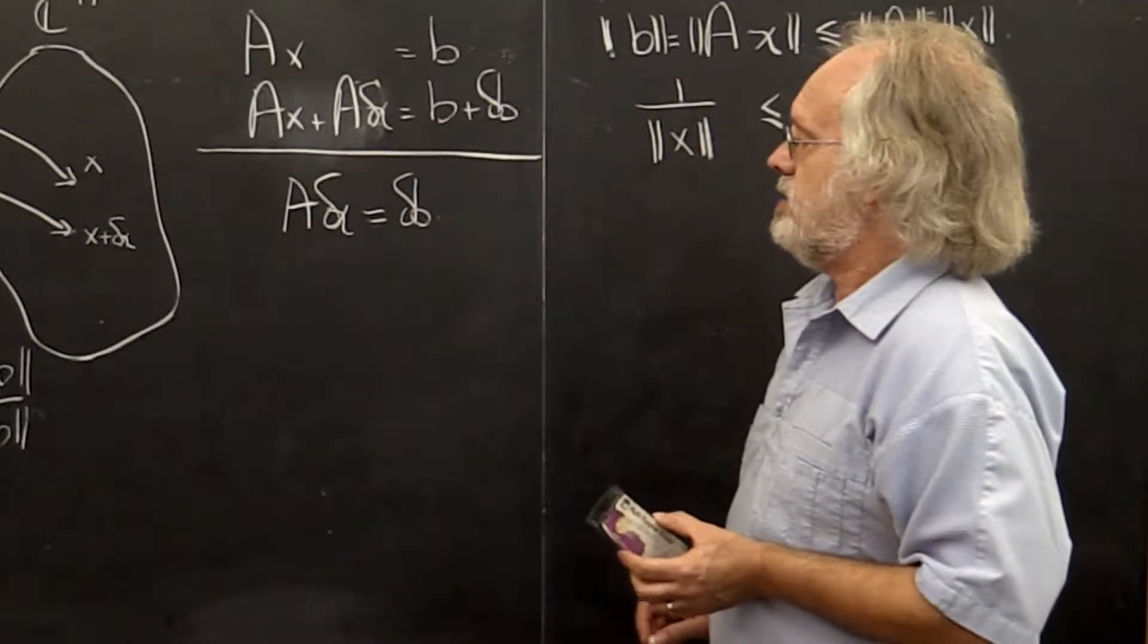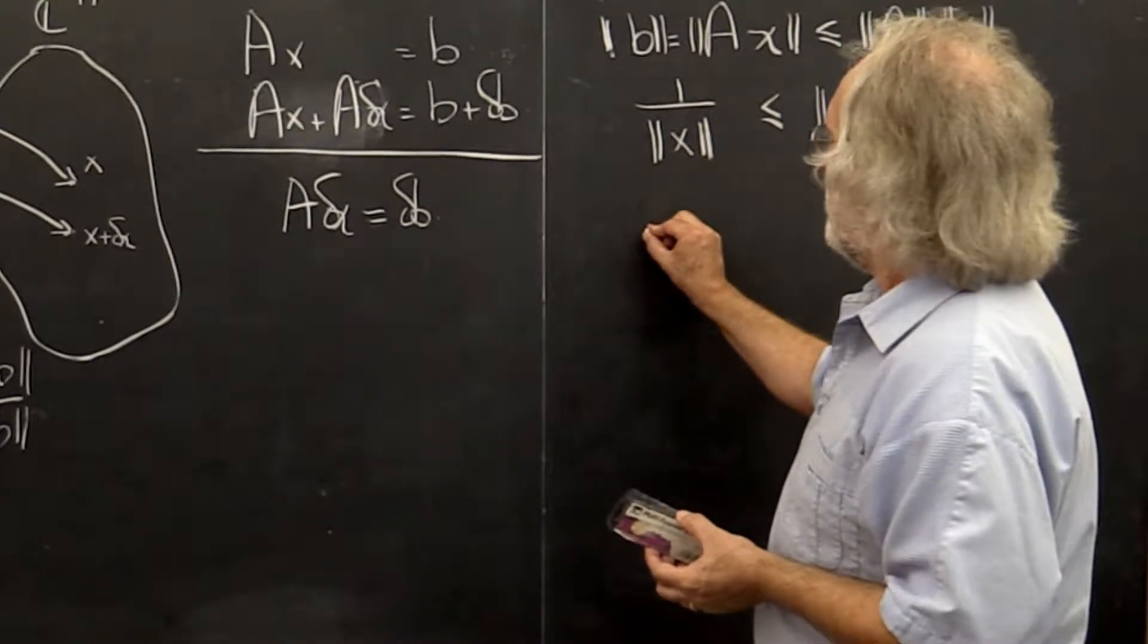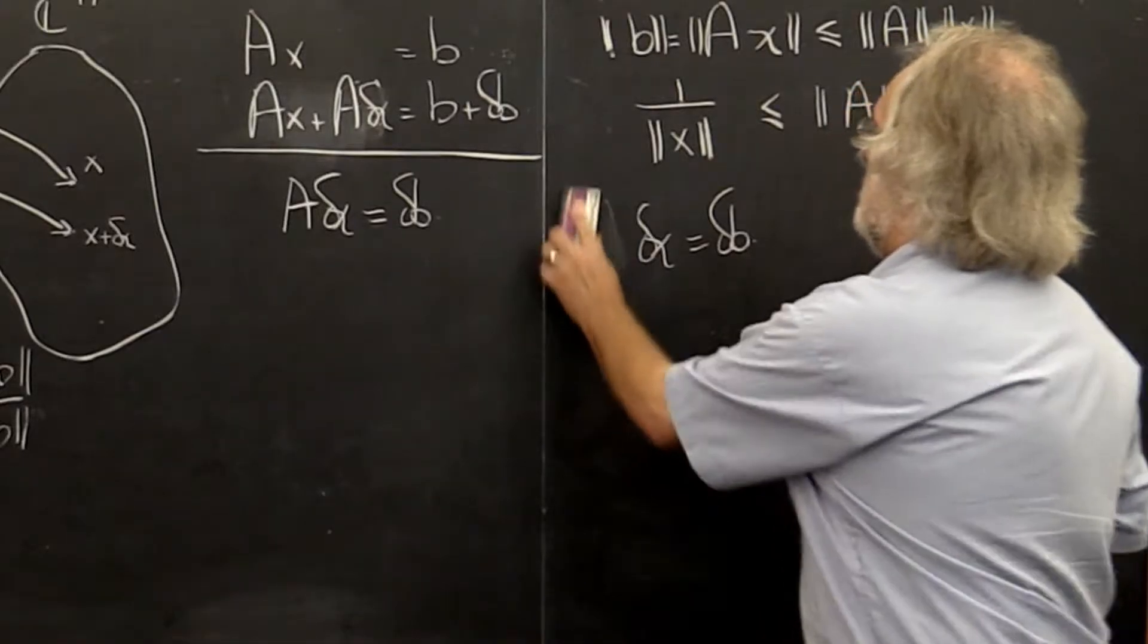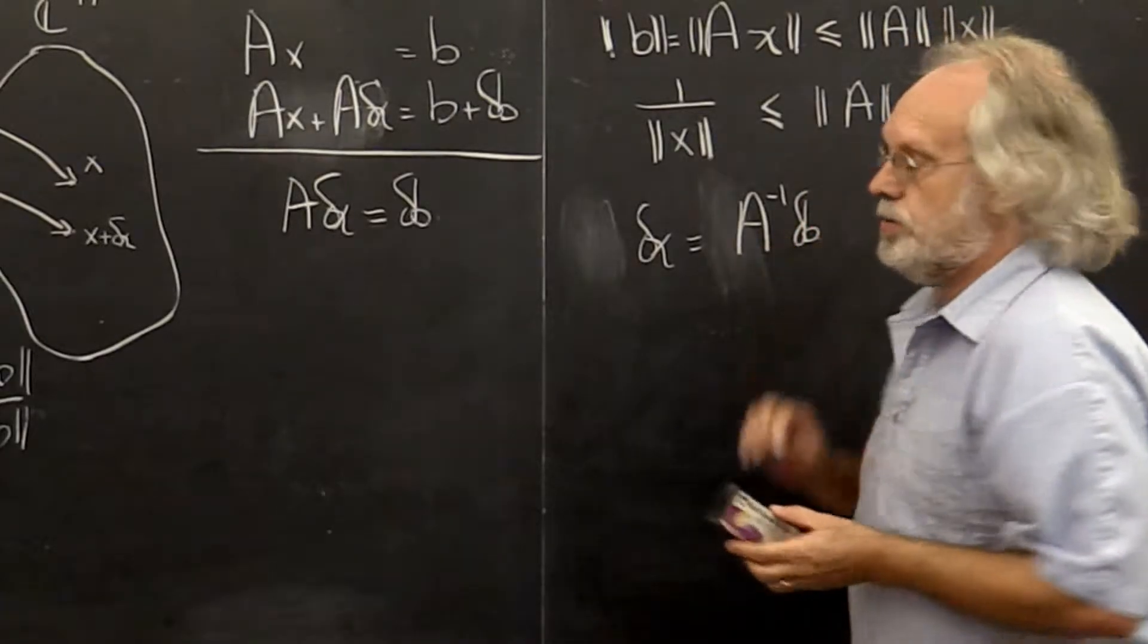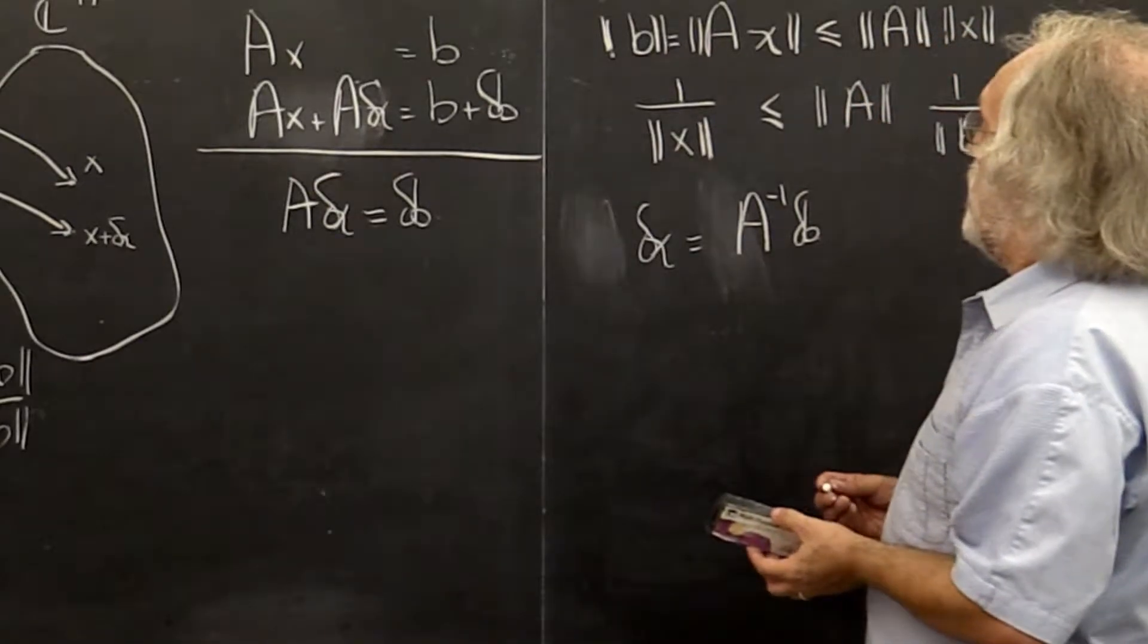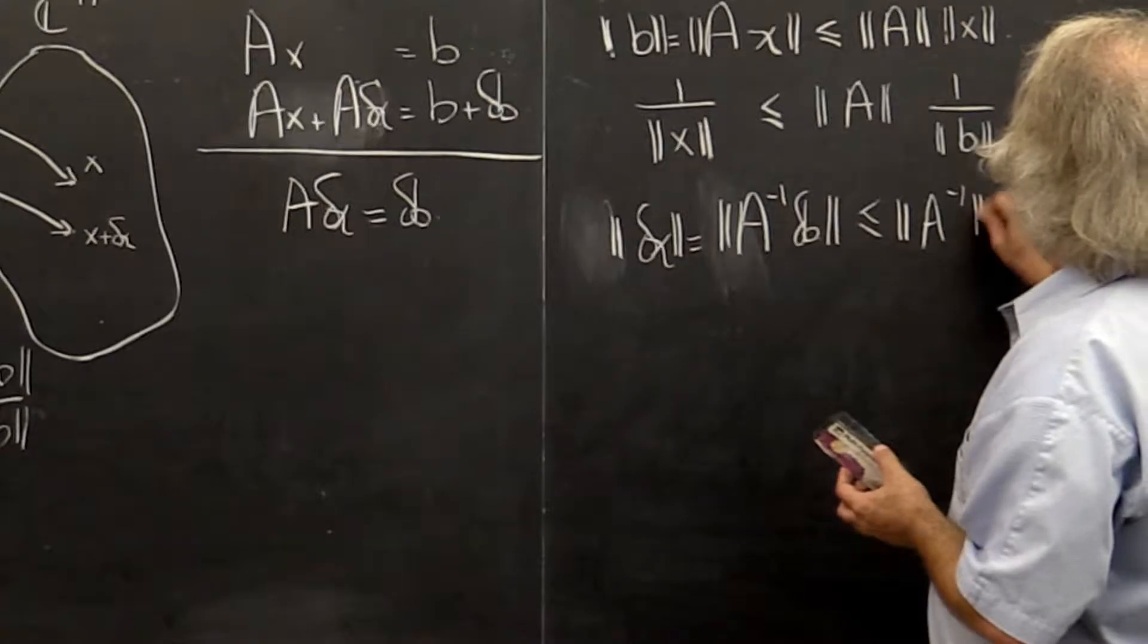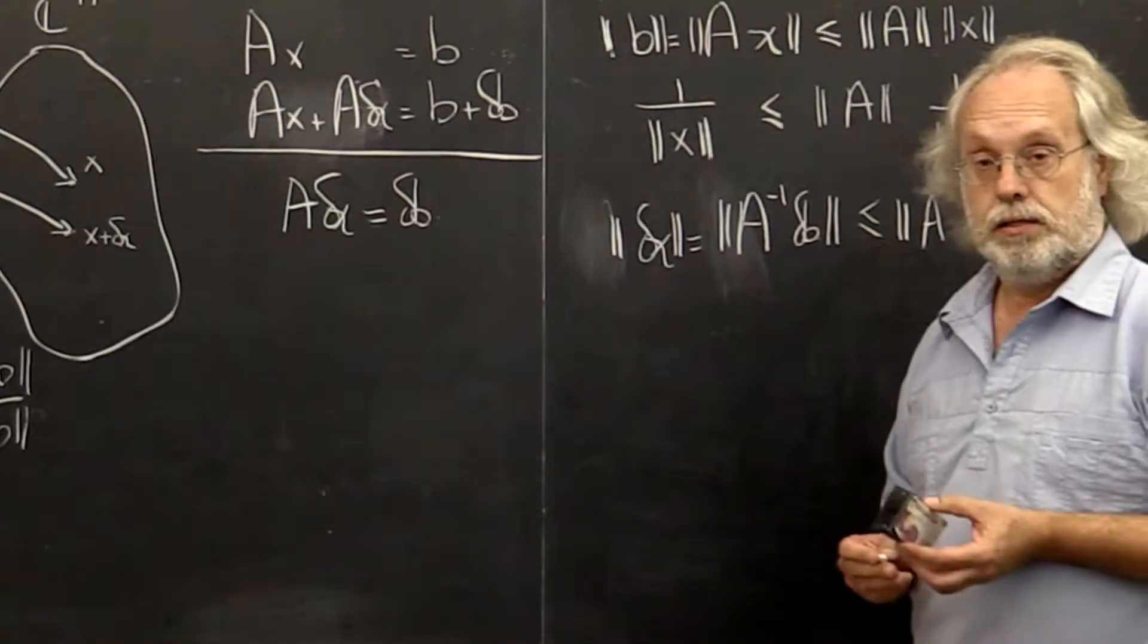Now we need to somehow relate delta x and delta B to the norms. For that we're going to rewrite A times delta x equals delta B as delta x equals A inverse times delta B. We can do that because we assume that A was non-singular and therefore we know it has an inverse matrix. Then we can take the norm of that and bound that by the norm of A inverse times the norm of delta B.